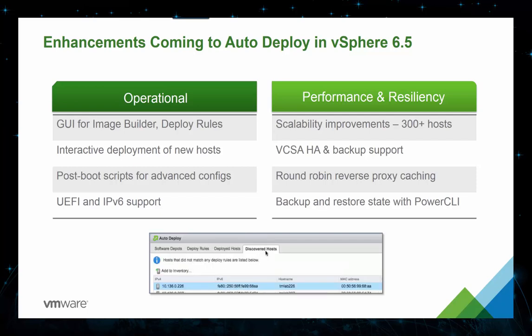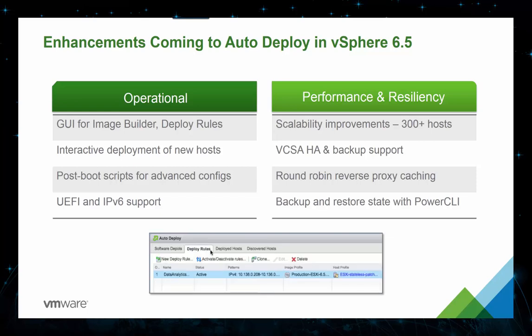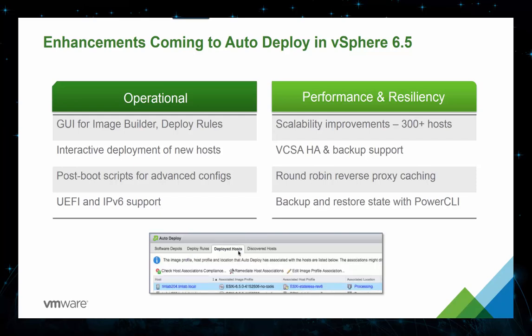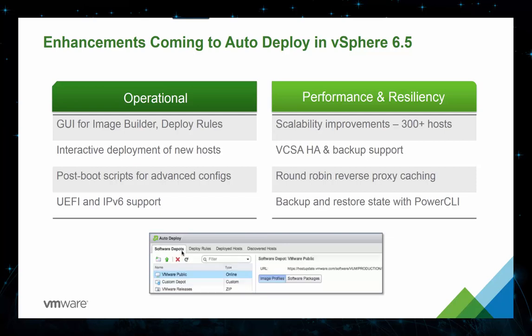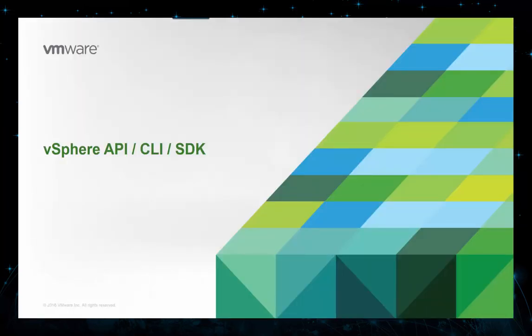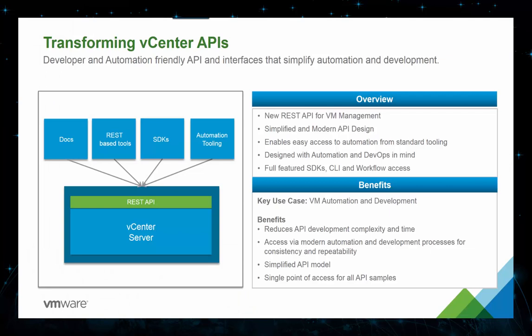From a performance and resiliency standpoint, there have been scalability improvements for over 300-plus host capability. Appliance HA and backup support is included, and round-robin reverse proxy caching is also included. We've also made improvements to our vCenter API with a new REST API for VM management. This is a more simplified and modern API design that most organizations are using when developing applications for automation and DevOps. It provides full-feature SDKs, CLI, and workflow access, makes it easier for third-party vendors to write APIs to plug into vSphere, and helps reduce development complexity and time while providing modern, standardized APIs.